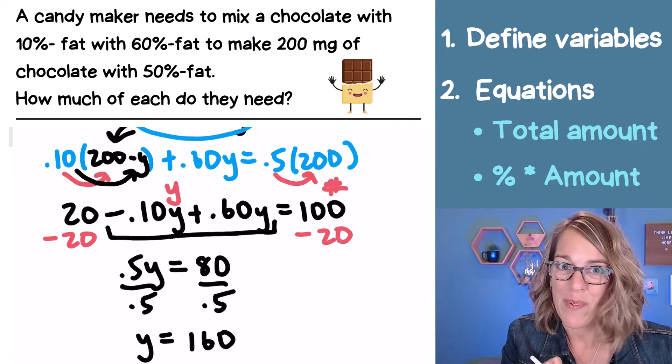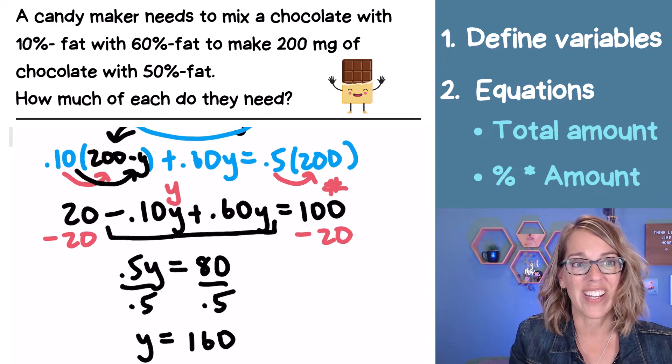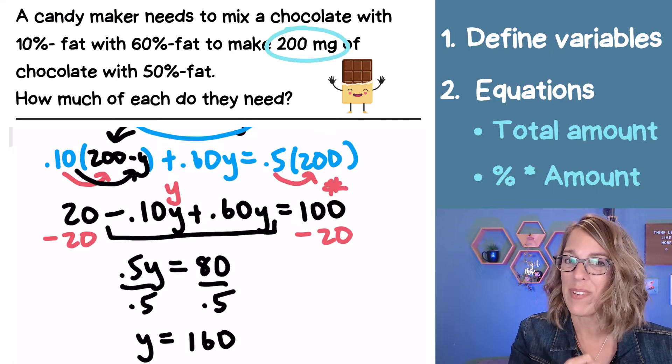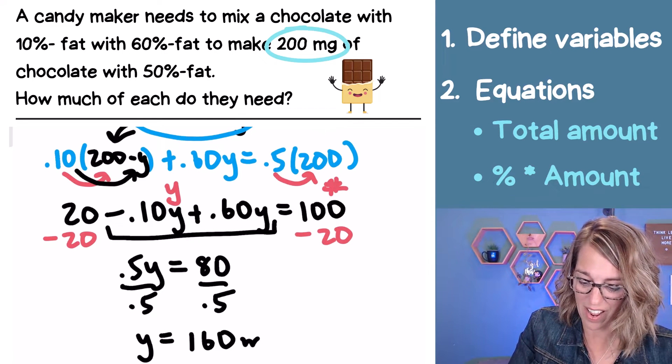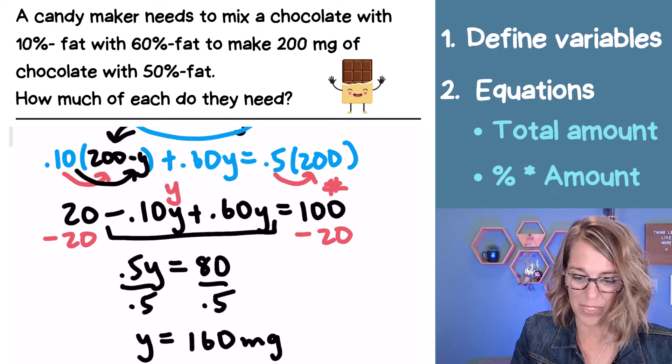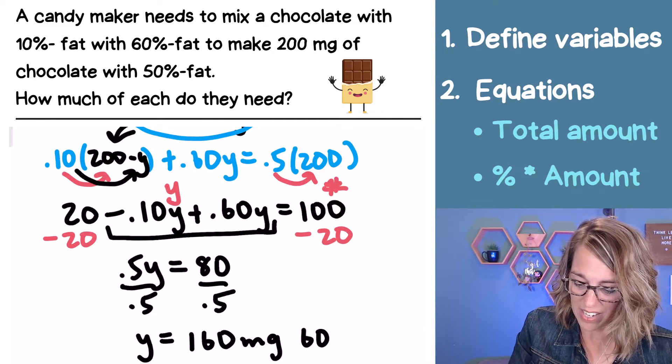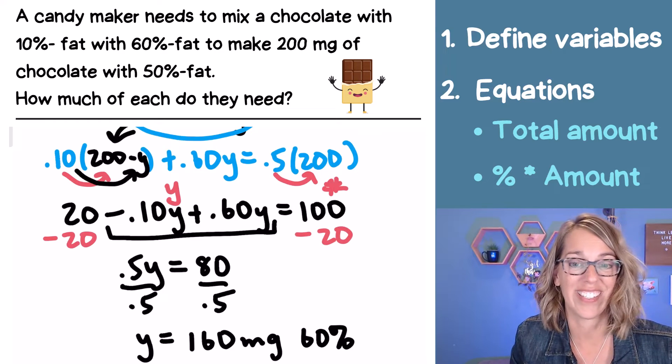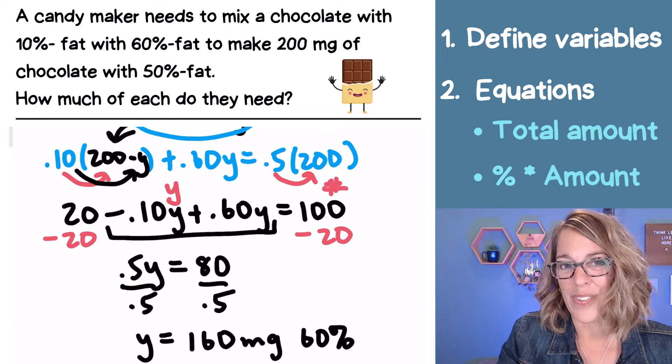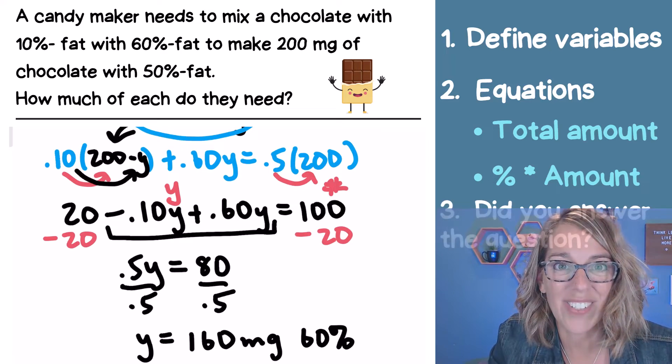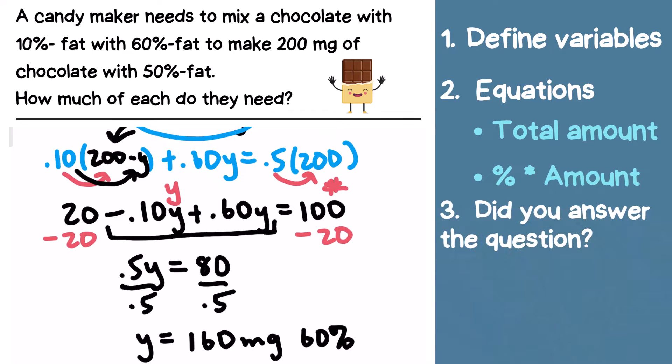This is an amount, remember? And if I go back up to my original question, it's the amount in milligrams are our units. So I've got 160 milligrams. Y was my 60% fat content chocolate. So as I'm thinking about those steps, there is one more step. I have an answer, but did I actually answer the question? And the question is how much of each do they need? I only right now have answered how much of Y, which is the 60% chocolate that they need.